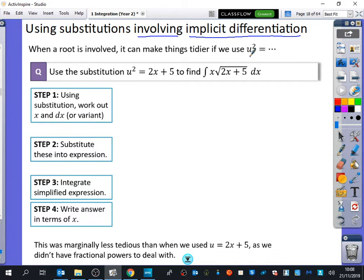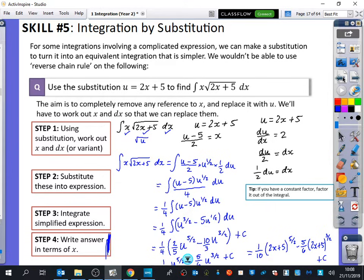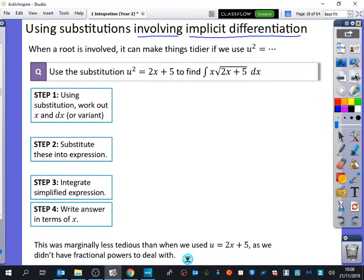On that previous page, we used u equals 2x plus 5, which meant we ended up with u to the power of a half, which is potentially tricky to do. Instead though, this time we're going to use u squared equals 2x plus 5, because this is then going to change this thing that we have here. This thing is going to just become u. So that's actually just going to be a bit nicer.